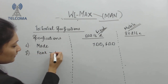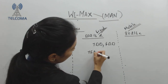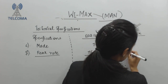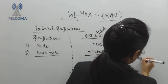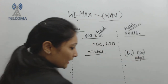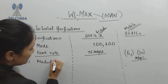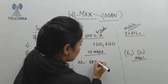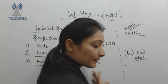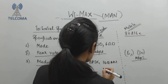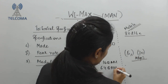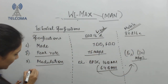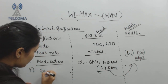For peak data rates, the fixed access system delivers up to 75 Mbps, while the mobile system delivers either 5 Mbps or up to 30 Mbps under improved circumstances. The modulation techniques include BPSK, 16-QAM, and 64-QAM, with 64-QAM specifically for mobile access.